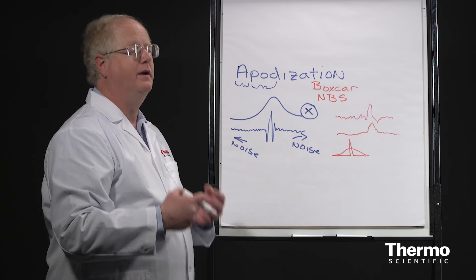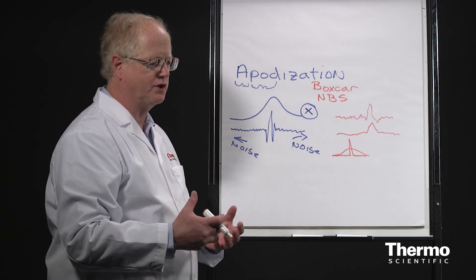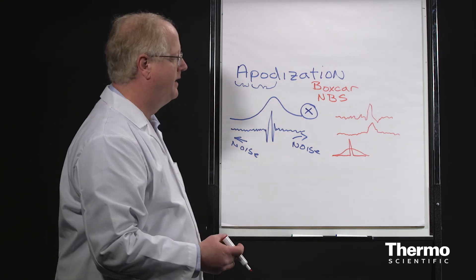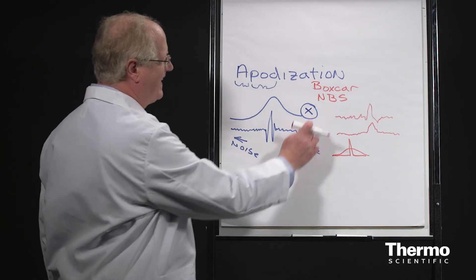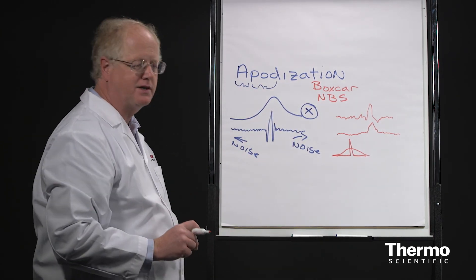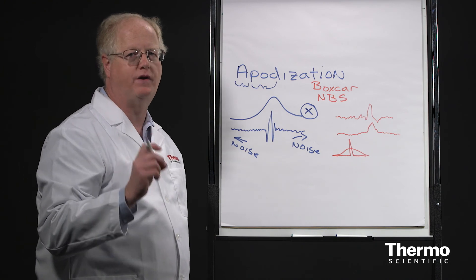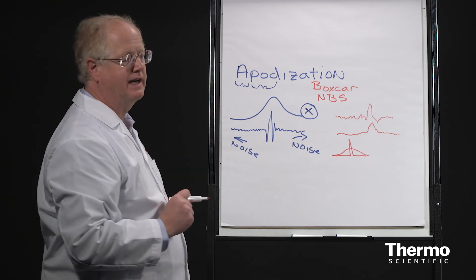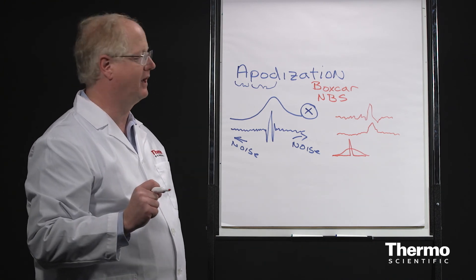And again, the manufacturers set those up so that there's already a default chosen that makes that decision for you. In the case of gases, however, you may need the boxcar because you're going to need those very narrow line widths. And that's the example we'll look at next when we go into the lab with this.